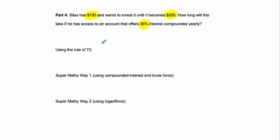So to use the Rule of 72, the Rule of 72 says take 72 and divide it by your interest rate, 36, no percent sign, and that equals the answer, 2. It'll take 2 years to double your money according to the estimation of the Rule of 72, but that's an estimation.